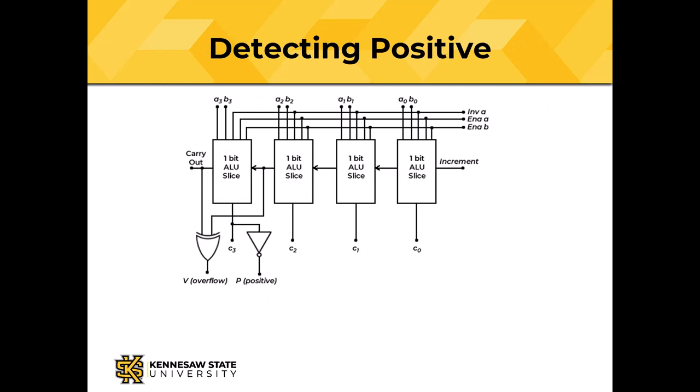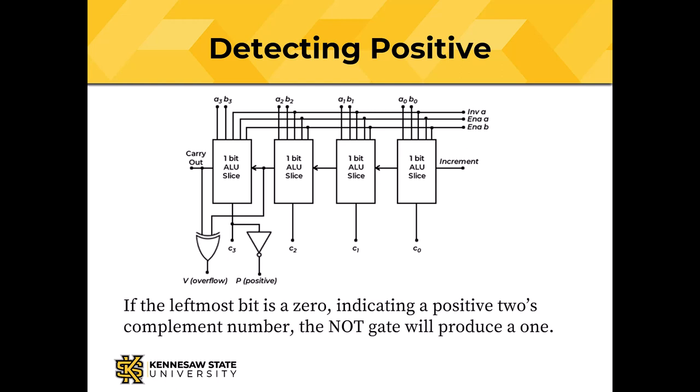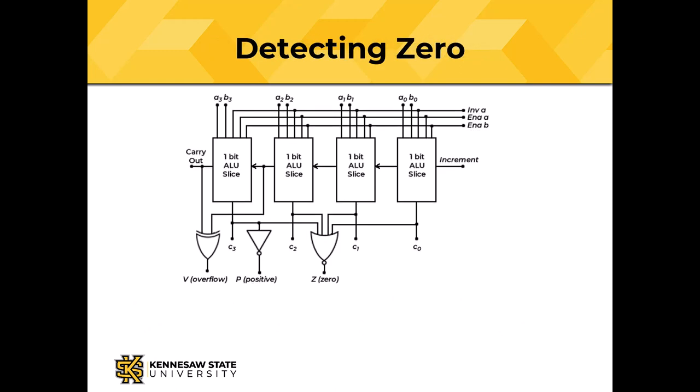We also have to detect positive. The check for positive just inverts the sign bit: if the sign bit is 1 (negative), the P output will be 0; if the sign bit is 0 (positive), the P output will be 1. Note that the value of all zeros is considered positive. We also have to detect zero. The zero detector is a NOR gate with one input for each bit — in this example it's a 4-input NOR; for a 12-bit computer it would be a 12-input NOR. If all output bits from each bit slice are 0, the Z output will be 1.